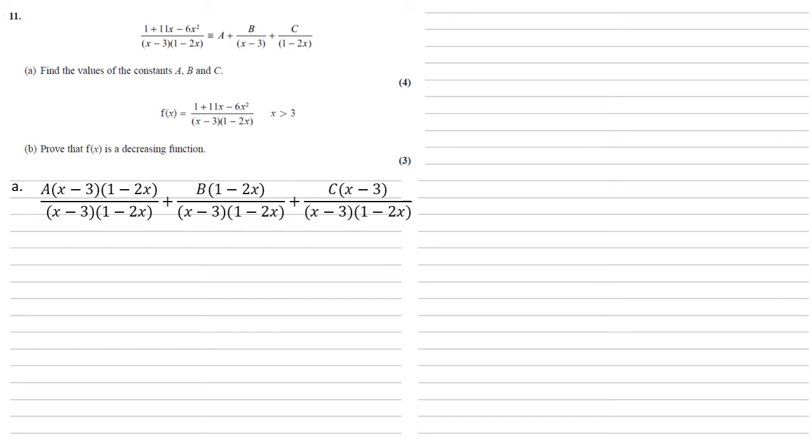So we've now got three fractions, they've all got the same denominator so we can bring the numerators together in one big fraction. We have a(x - 3)(1 - 2x) + b(1 - 2x) + c(x - 3) all over (x - 3)(1 - 2x).